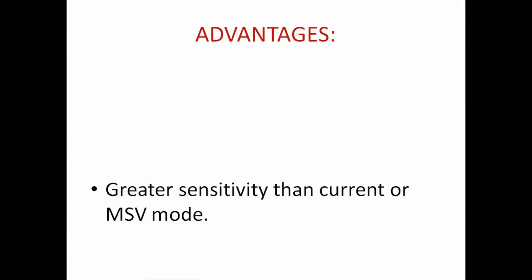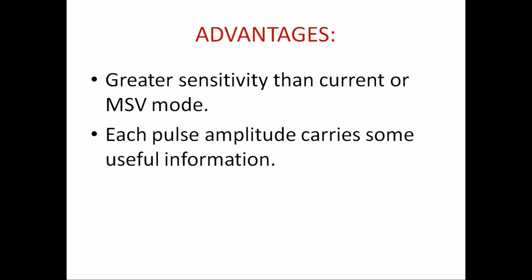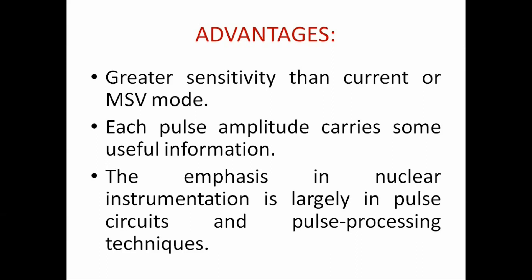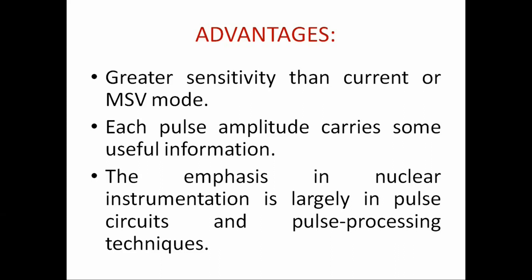Now let us look at a few advantages that the pulse mode of operation has to offer. First, the sensitivity achievable is often many factors greater than when using current or MSV mode, because each individual quantum of radiation can be detected as a distinct pulse. The second and more important advantage is that each pulse amplitude carries information that is often useful or even necessary for a particular application. In current and MSV mode this information on individual pulse amplitudes is completely lost, and all interactions regardless of their amplitude contribute to the average measured current. Because of these inherent advantages, the emphasis in nuclear instrumentation is largely on pulse circuits and pulse processing techniques.